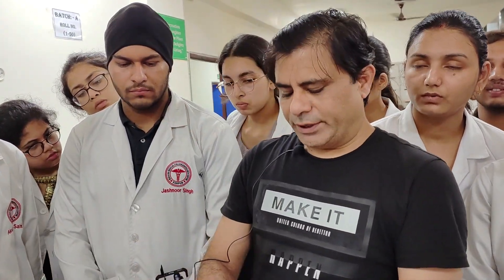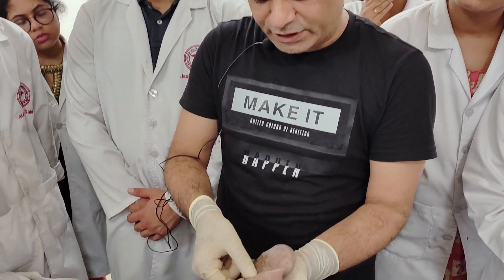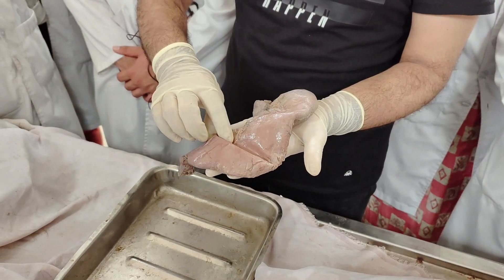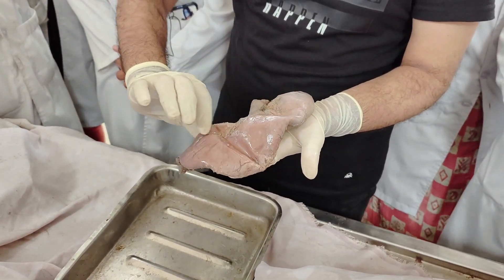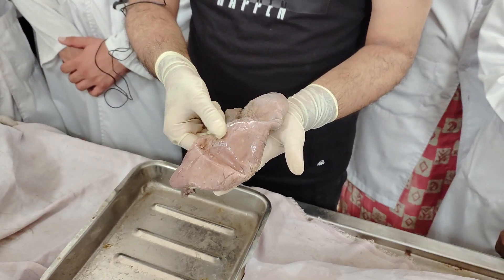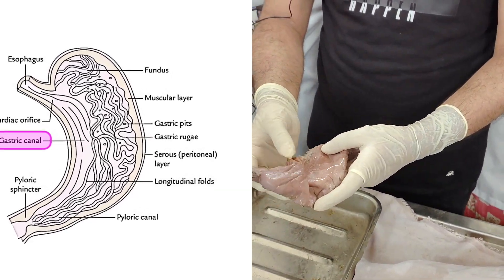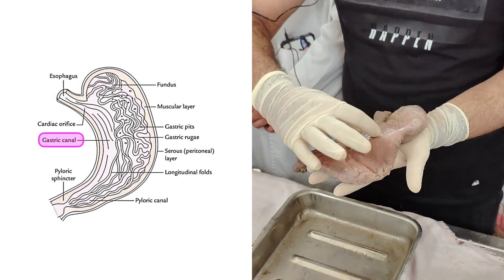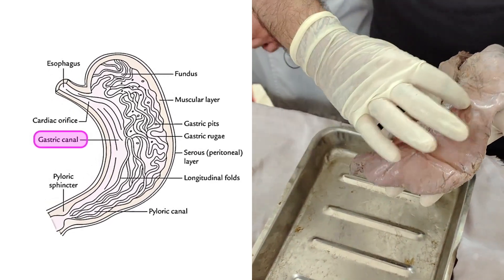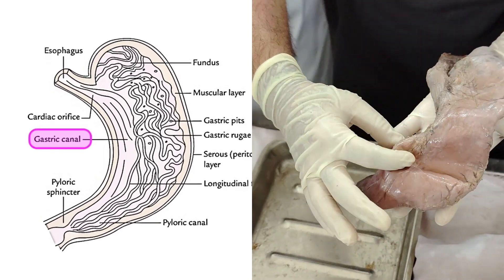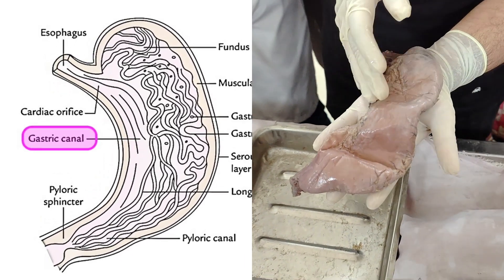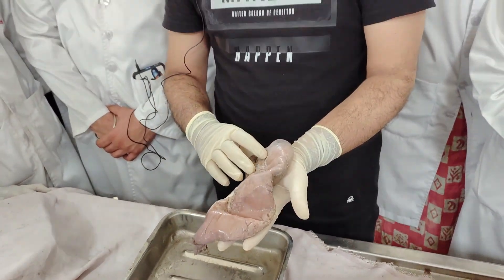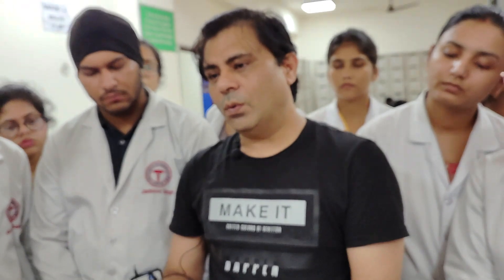These are the parts of the stomach. Now, along the lesser curvature, there will be a ridge on the inside. If they ask what a gastric canal is — the folds of the mucosa inside form gastric rugae, and there is a ridge here. This portion of the stomach along the lesser curvature is called the gastric canal. Fluids easily pass along this lesser curvature.